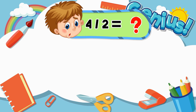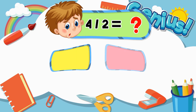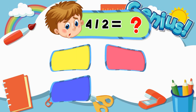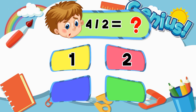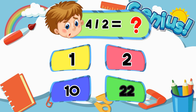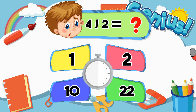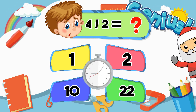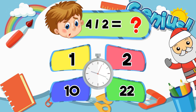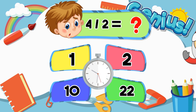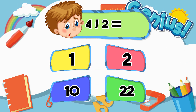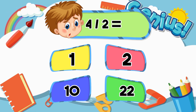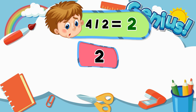What is 4 divided by 2? 2, 2, 1, 1, 22. [Answer:] 2.